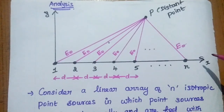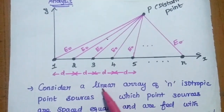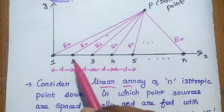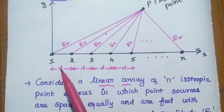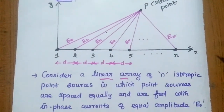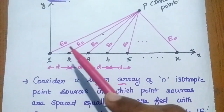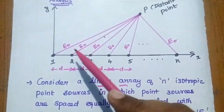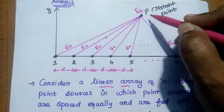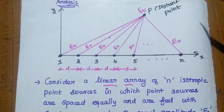For analysis, we consider a linear array of N isotropic point sources. The elements are equally spaced, with distance between elements denoted as small d. The elements are fed with in-phase currents of equal amplitude E₀, so each element produces electric field E₀ into space.